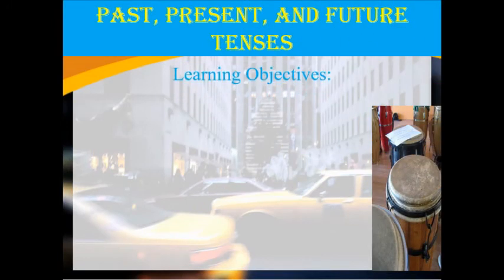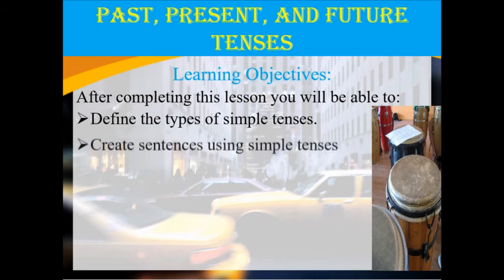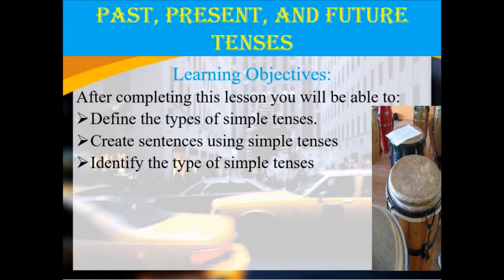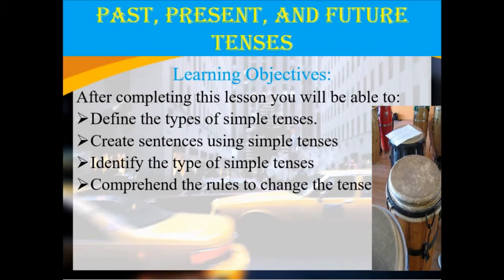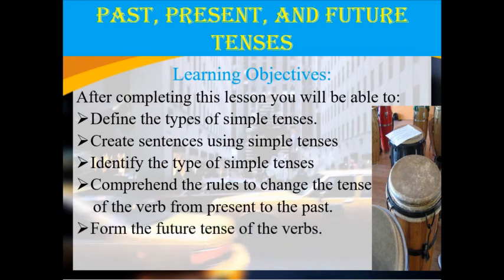Learning objectives. Our first learning objective is, after completing this lesson, you will be able to: one, define the types of simple tenses; two, create sentences using simple tenses; three, identify the types of simple tenses; four, comprehend the rules to change the tenses of the verb from present to the past; and finally, form the future tenses of the verbs.